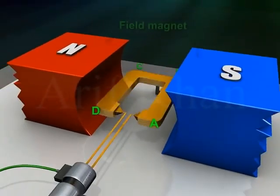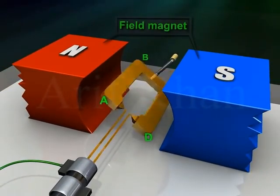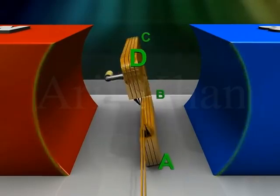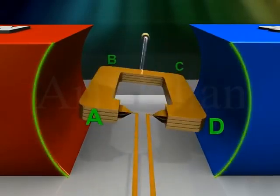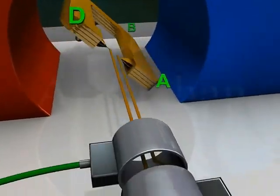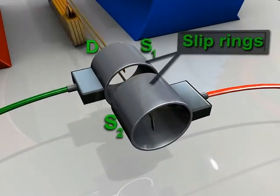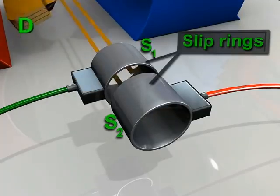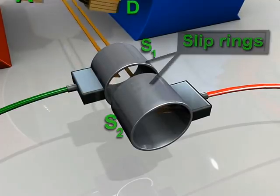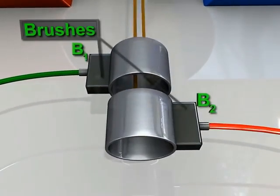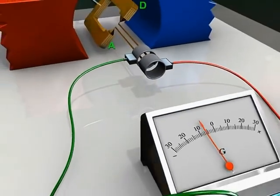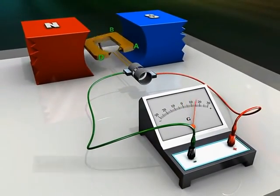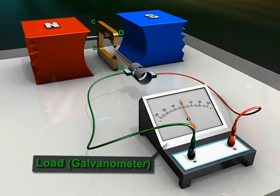A field magnet, which may be a strong permanent magnet with concave poles. Two slip rings S1 and S2, which are connected to the armature and rotate with it. Two brushes B1 and B2, which provide electrical contact with the slip rings, and a load which may be a galvanometer.